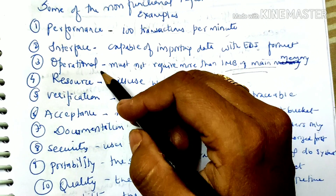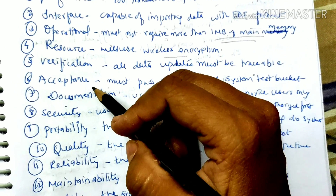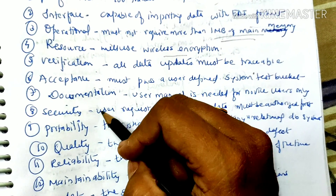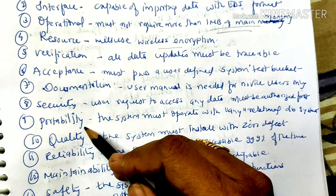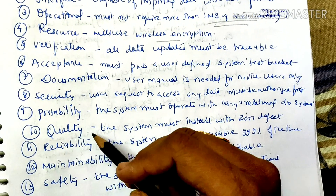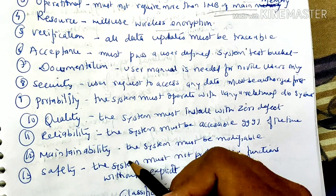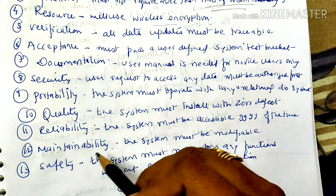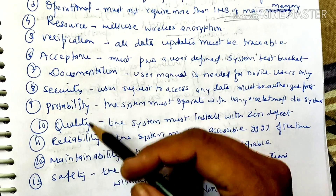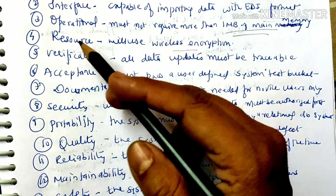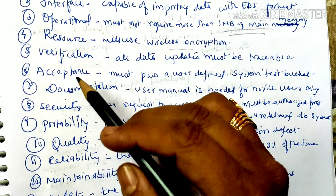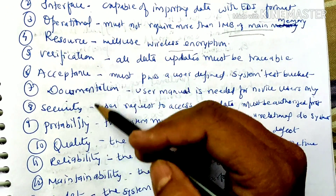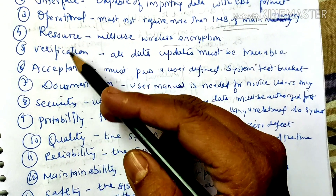The categories of non-functional requirements include: interface, operational, resource, verification, acceptance, documentation, security, portability, quality, reliability, maintainability, and safety. These are requirements that the customer expects. They are implicit — the customer will not explicitly tell you that all these features must be in the software; they are implicitly expected.